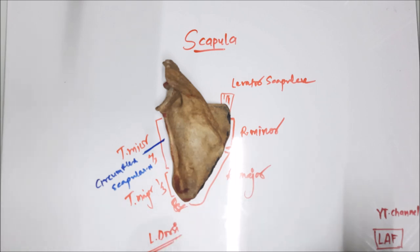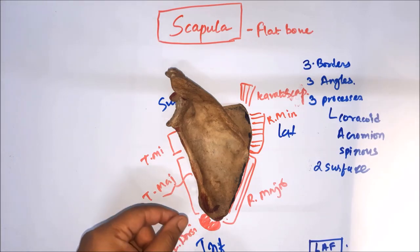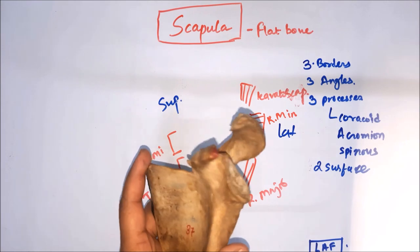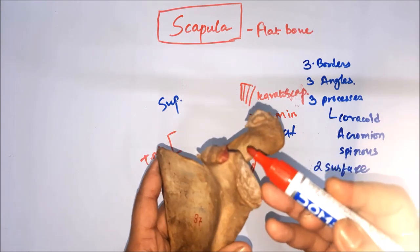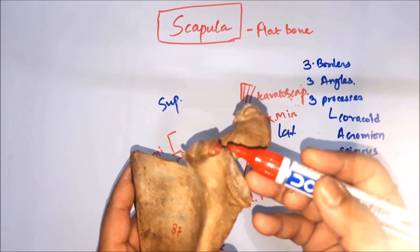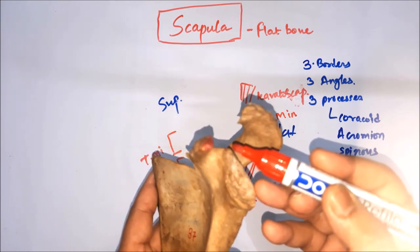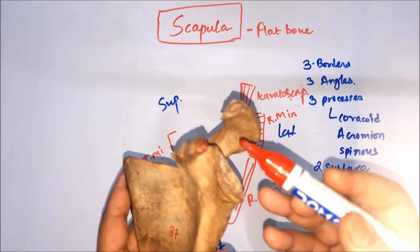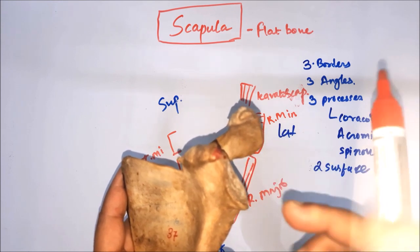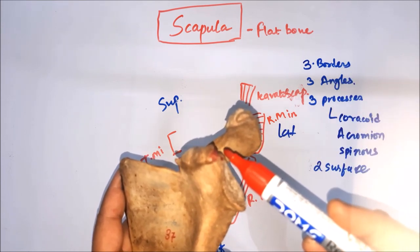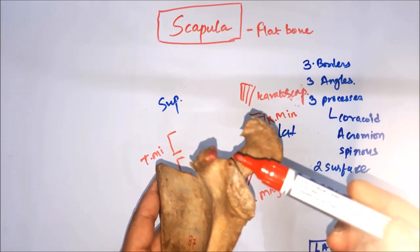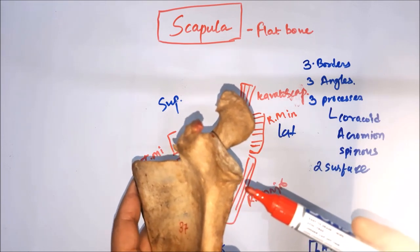At the glenoid cavity, above and below it there are two tubercles: the supraglenoid tubercle above and the infraglenoid tubercle below. The supraglenoid tubercle gives origin to the long head of the biceps muscle, and the infraglenoid tubercle gives origin to the long head of the triceps muscle.